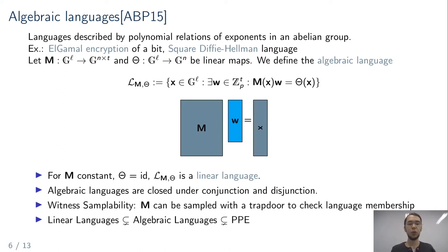To make it explicit: linear languages are a real subset of algebraic languages, which are themselves a subset of pairing product equations provable with Groth-Sahai. Algebraic languages are defined over a single group, while pairing product equations span all three groups of an asymmetric pairing, making them more versatile.